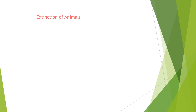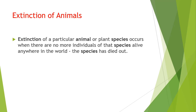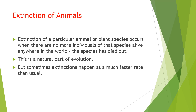Let us discuss what is extinction of animals. Extinction of a particular animal or plant species occurs when there are no more individuals of that species alive anywhere in the world — the species has died out. If all animals are killed and no individual is left, we call it extinction of that particular animal. This is a natural part of evolution, and sometimes extinction can happen at a much faster rate than usual.